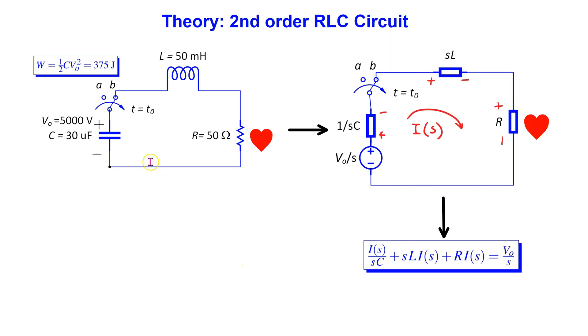We transform the circuit to the s domain. The resistor becomes an impedance R ohm in the s domain. The inductor becomes an impedance sL ohm in the s domain. The capacitor becomes an impedance 1 over sC ohm in the s domain. The initial charge voltage on the capacitor is modeled as a DC voltage source V naught over s in the s domain.